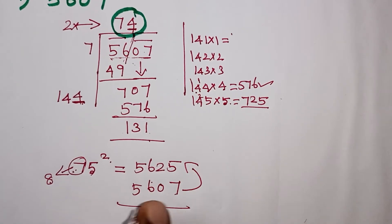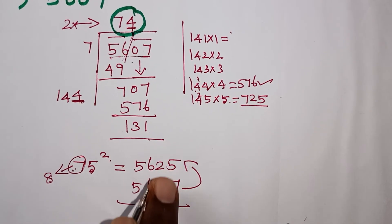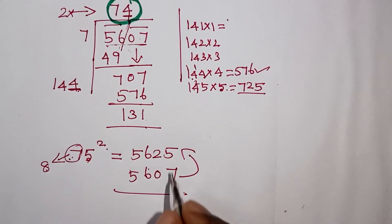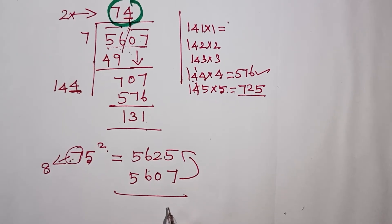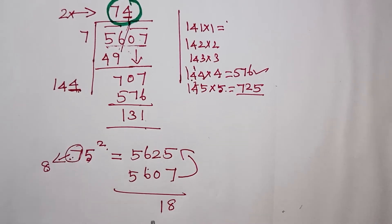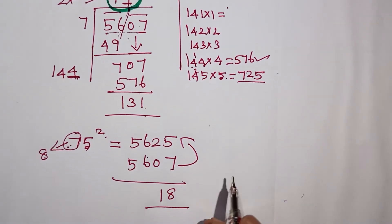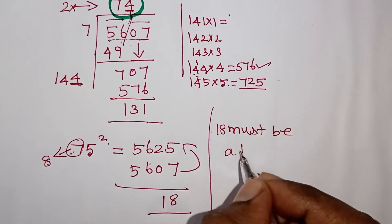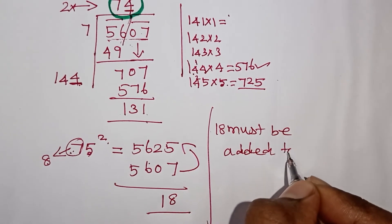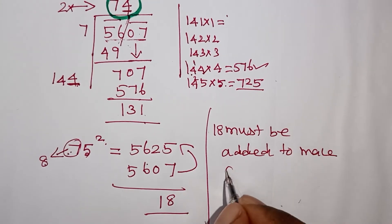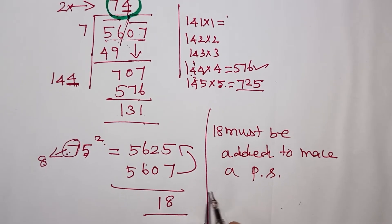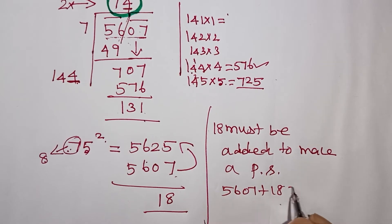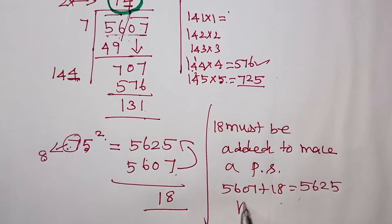So 5625 is a perfect square. Our number is 5607. The difference is 5625 minus 5607 equals 18. So 18 must be added to make it a perfect square. If we add 18: 5607 plus 18 equals 5625.